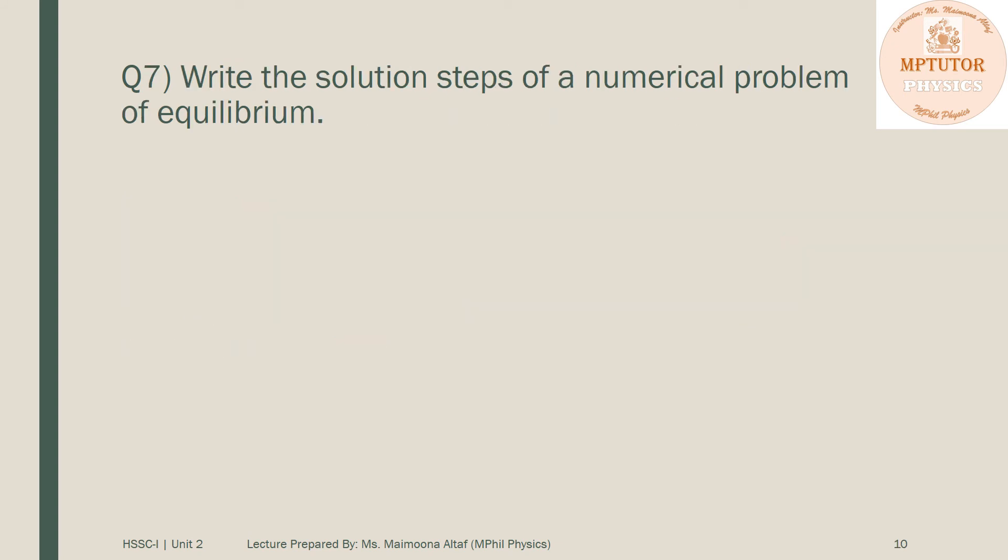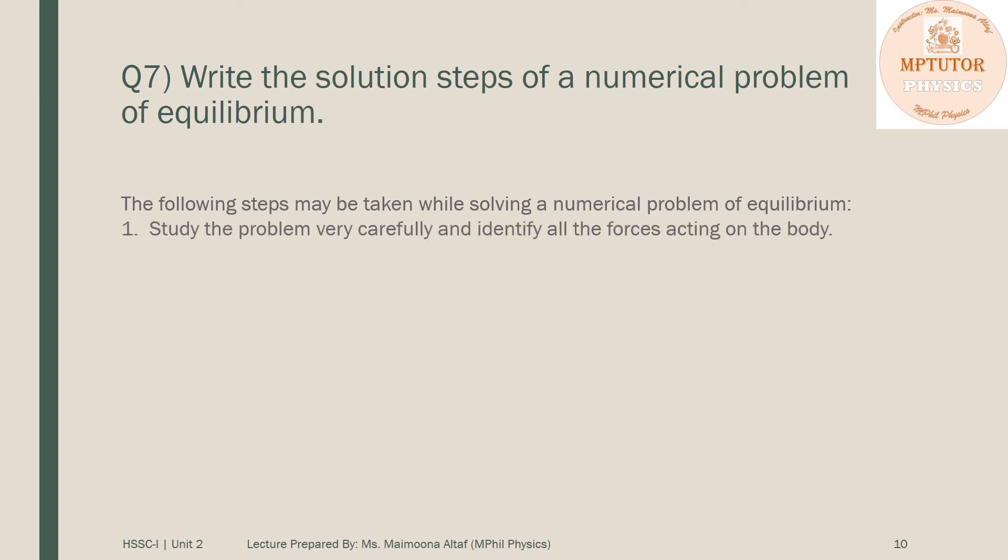Last question, question number seven is: write the solution steps of a numerical problem of equilibrium. The following steps may be taken while solving a numerical problem of equilibrium. First step: study the problem very carefully and identify all the forces acting on the body. Second point: draw a clear diagram and show all forces acting on the body. Point number three: mark all the forces as F1, F2, and so on. Number four: find all the angles theta 1, theta 2, theta 3, etc.